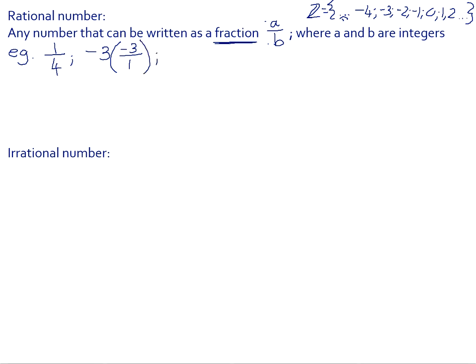All decimal numbers, for example 0.1, are also rational because they can be written as a fraction — one over ten. And one that we often forget about is our recurring decimals, for example 0.3 recurring. The dot shows us that that three is going to carry on to infinity. It is also a rational number because in its fraction form it can be converted to one over three.